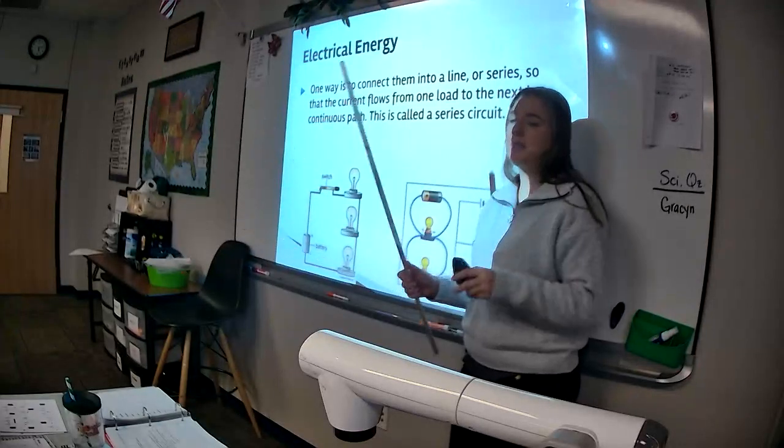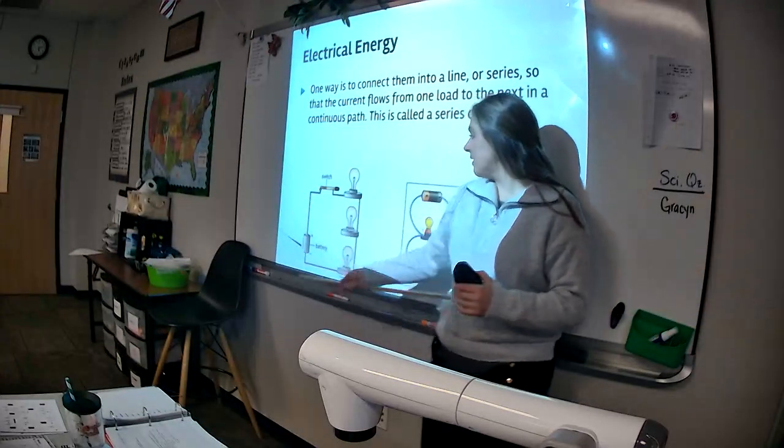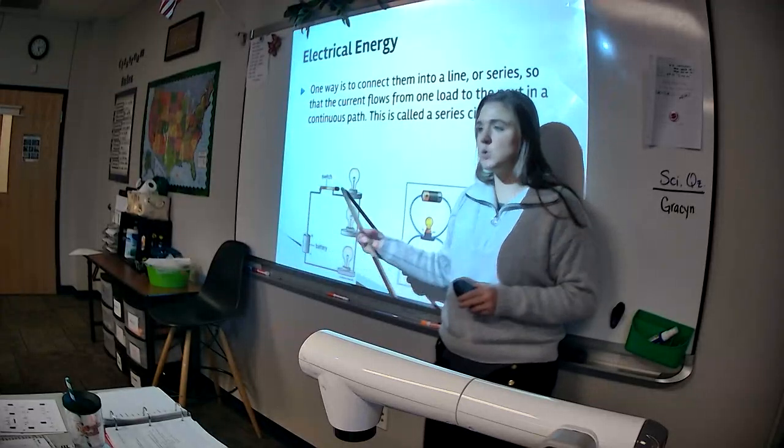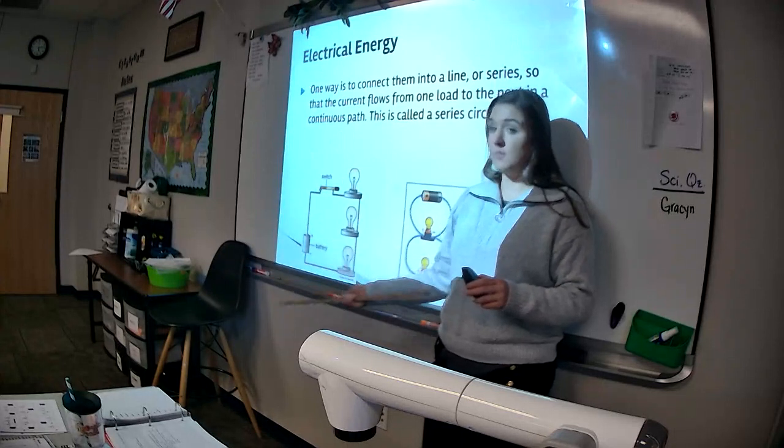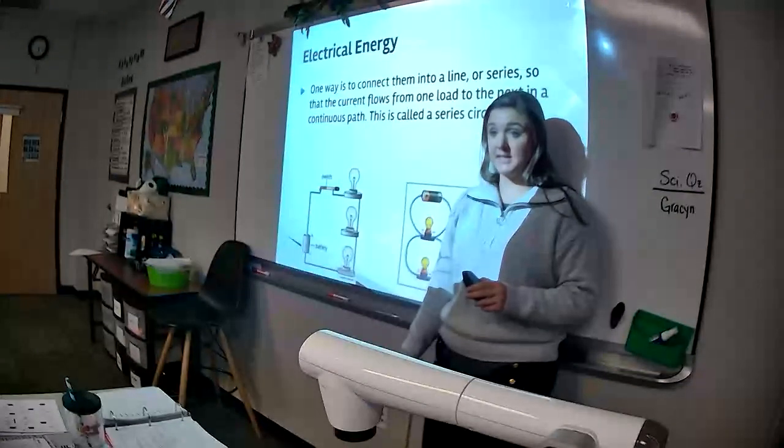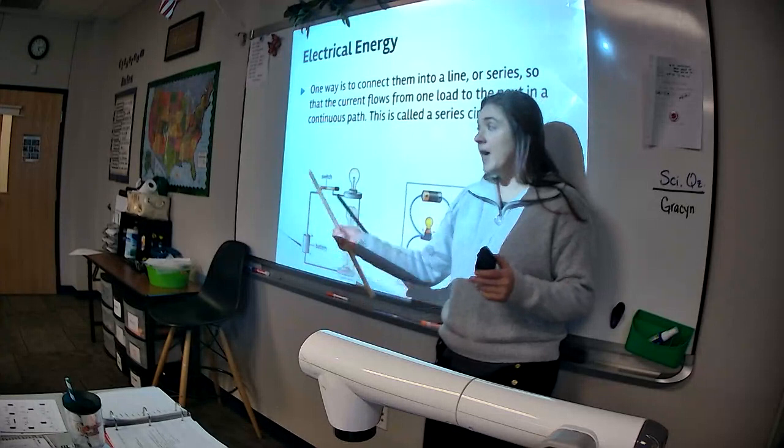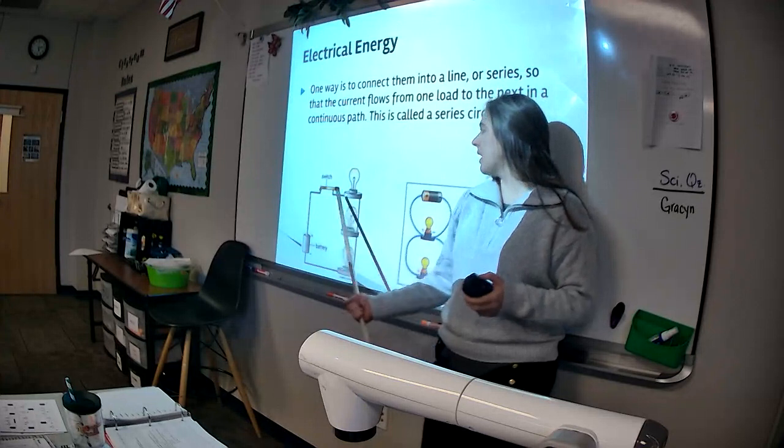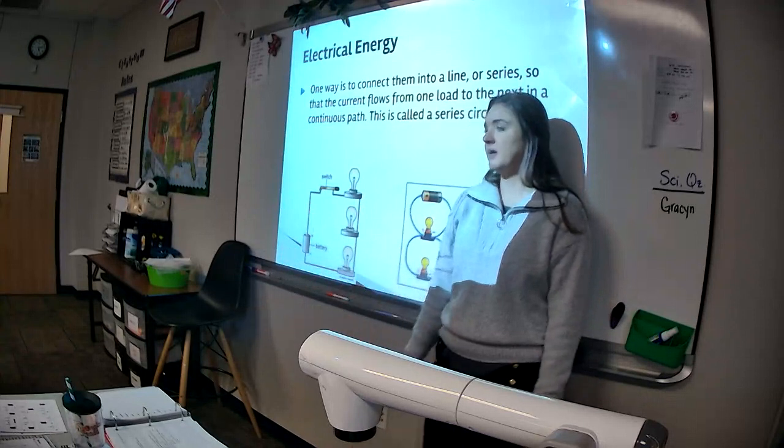It makes sense. If I only have this much power to give, and now I have to give it to three pieces instead of one piece, each one will get a less amount. That will make it dimmer. This also means that if I open the switch, which ones turn off? All of them. Exactly. If there's a break in the circuit at any point along the path, they all shut off. Because they're all on that one path. This is kind of like your Christmas lights when you lose one bulb and the whole string shuts off.